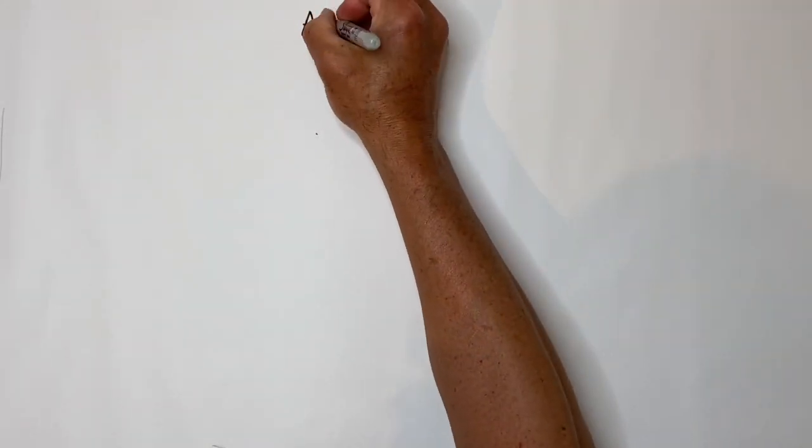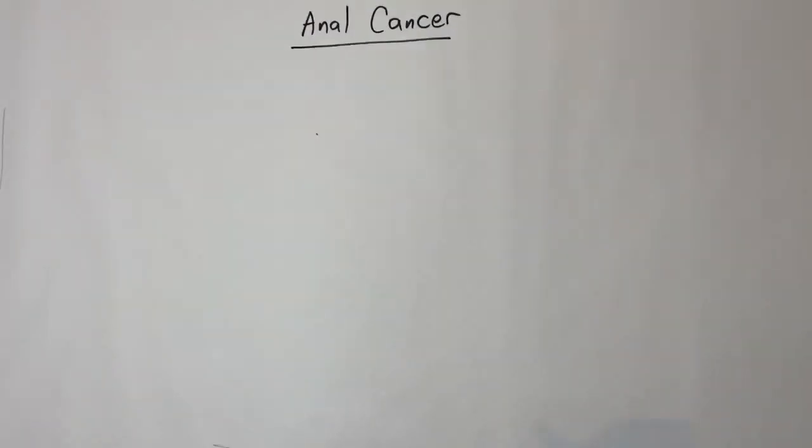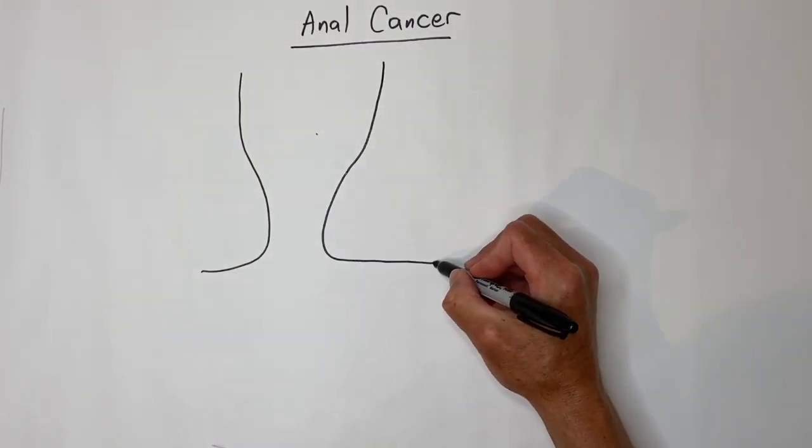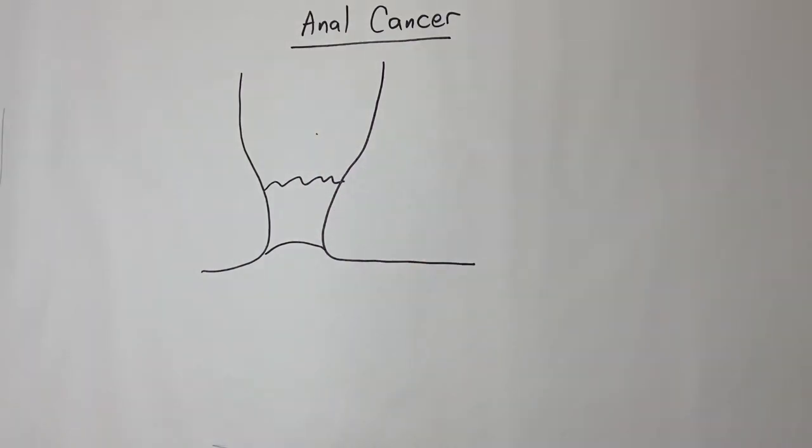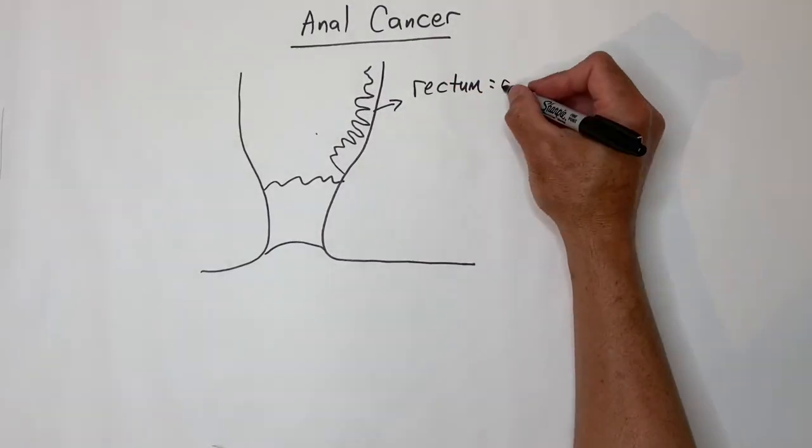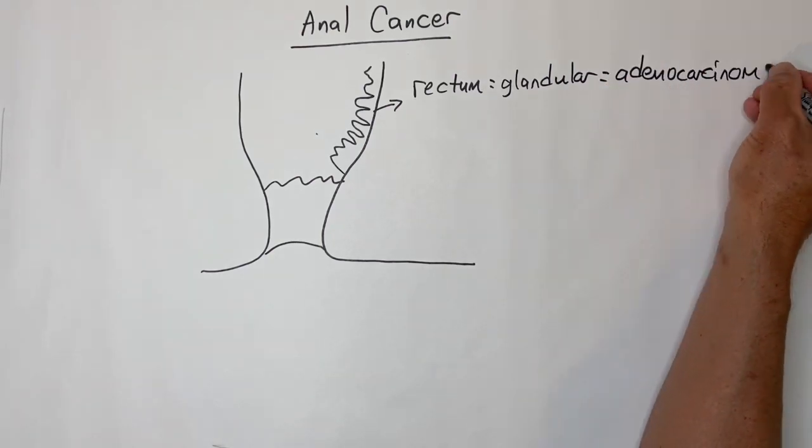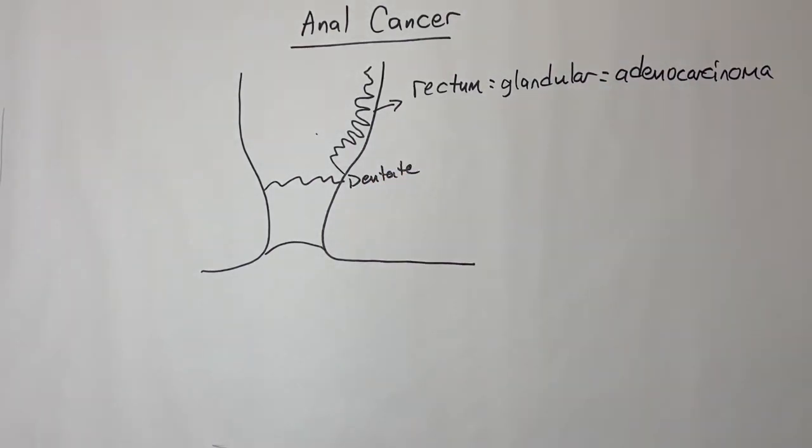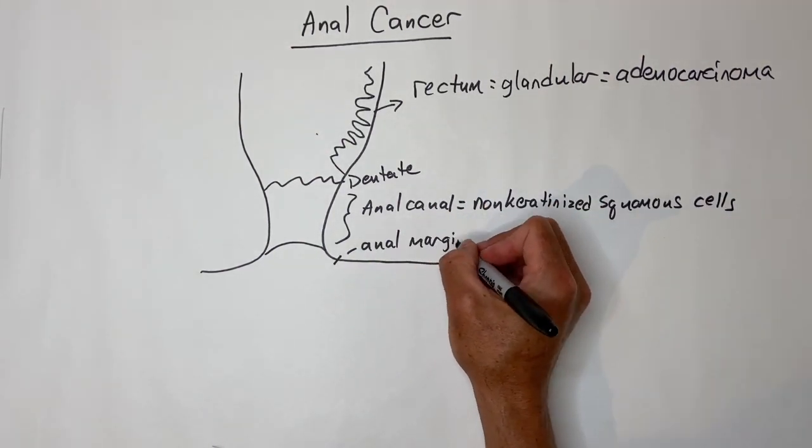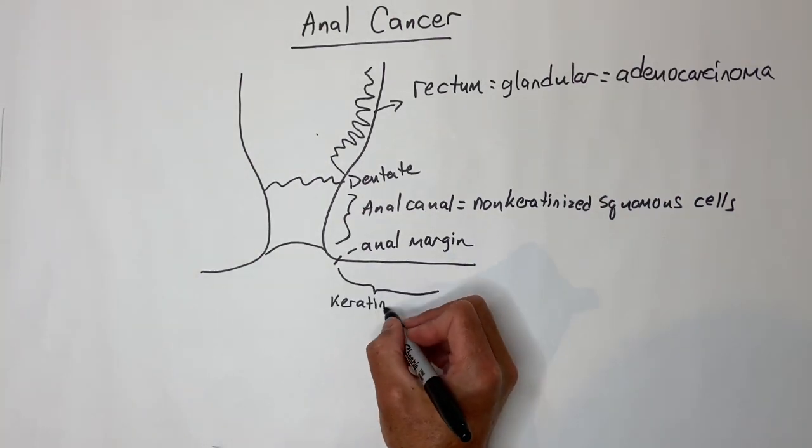Anal cancer refers to squamous cell cancer of the anal canal. The lining of the rectum is glandular mucosa, which makes adenocarcinoma. Then at the dentate line, you transition to non-keratinized squamous cells, which lines the anal canal. Then at the edge of the anal margin, you transition again to keratinized hair-bearing squamous cells.